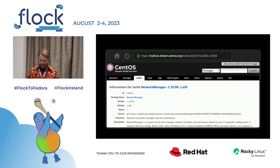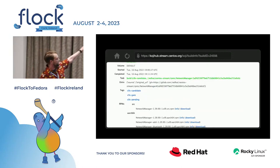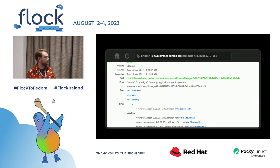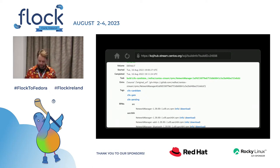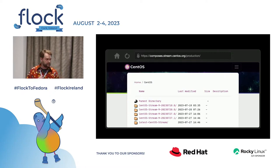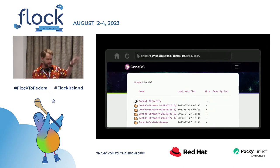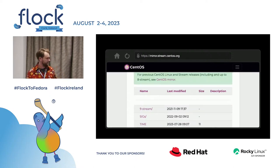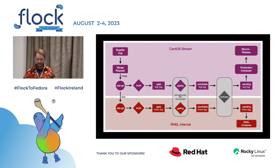Then a build gets submitted in Koji, the build system, where you can see all the build logs. Scrolling down, you can see the tags: candidate, gate, and pending — so it passed all the steps and is ready for compose. We also just added a pending-signed tag as an implementation detail where all signed packages land to make releasing smoother. When it's composed, composes.stream.centos.org has the production composes with repos and basic images, before proceeding to release to mirrors alongside SIG content.